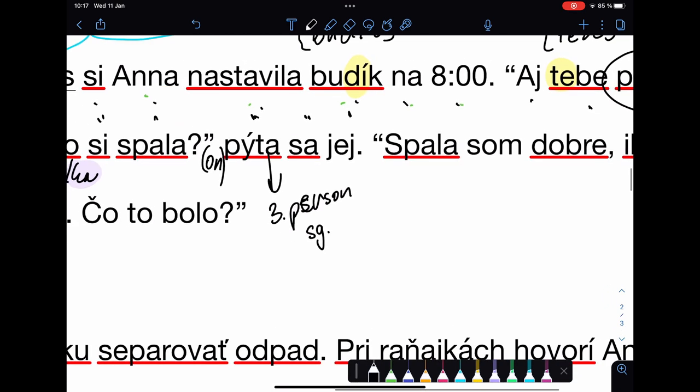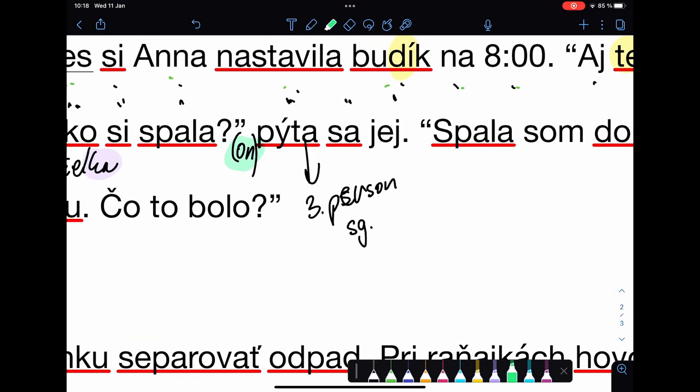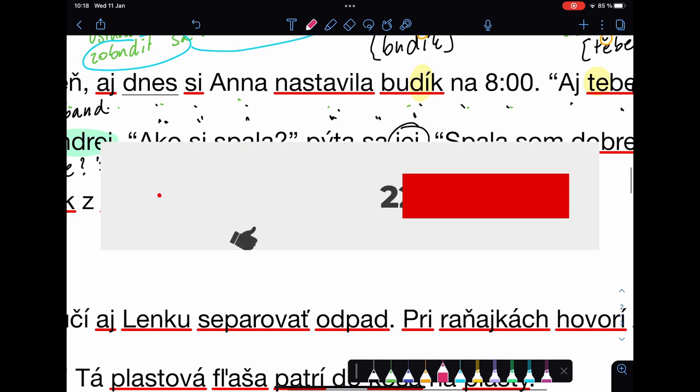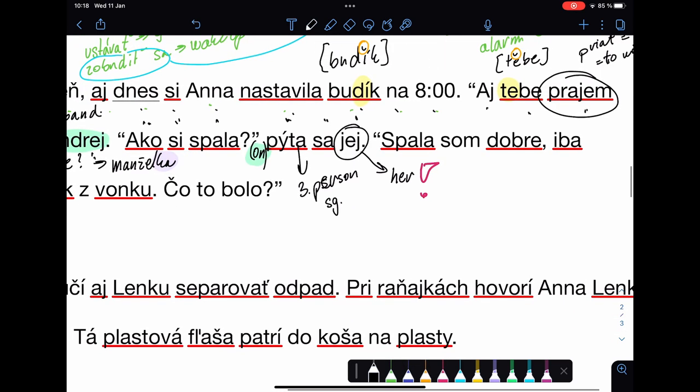On sa pýta. Pýta - that's the only form for third person singular. And we mentioned this guy, Andrej. So it's clear that's him. He asks her. Be careful, this is more complicated with pronouns in Slovak than it is in English. Spať, that's the word for sleep, or yeah, to sleep. That's infinite form.